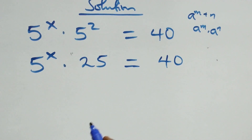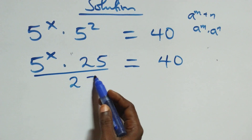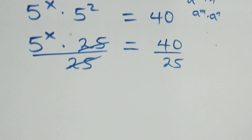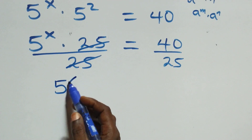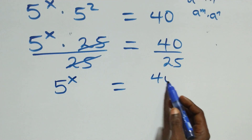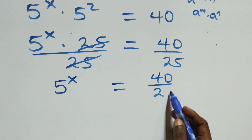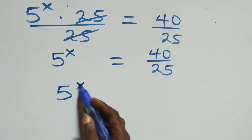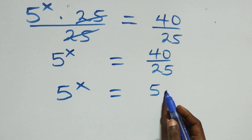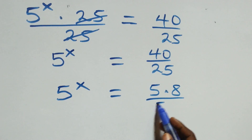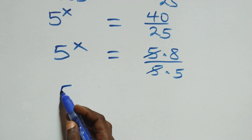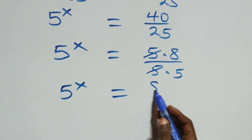Next step, we divide both sides by 25. Twenty-five cancels, and we have 5 raised to power x equals 40 over 25. We can write this as 5 raised to power x equals 5 times 8 over 5 times 5. The fives cancel, and we have 5 raised to power x equals 8 over 5.